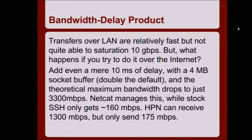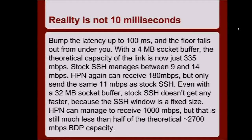If you tried to push data with HPN, it was only getting 175 megabits. Even going to Europe at 100 milliseconds of latency with a 4 megabyte socket buffer, you're down to 335 megabits per second of throughput — even though you're paying for gigabit at both sides. Stock SSH, because of a bug I'll get into, wasn't putting the right amount of pressure on the socket for the OS to grow the buffer, so it never got above about 128 or 192K. The actual performance was between 9 and 14 megabits, not the 300+ we were hoping for.